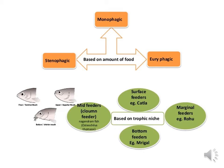Based on trophic niches, fishes have specific areas for their feeding. Rohu are marginal feeders, and katla are surface feeders. Mrigal fish, also called mori, feed on the bottom of the pond — they are called bottom feeders. Some fishes are mid-water or column feeders, like Osteochilus and Thynnichthys. Due to different feeding habits, most fish mouths fall into three general types: superior or supra-terminal mouth, which is upturned; terminal mouth, which is pointed straight forward and is the most common type; and inferior or sub-terminal mouth, which is turned downward.